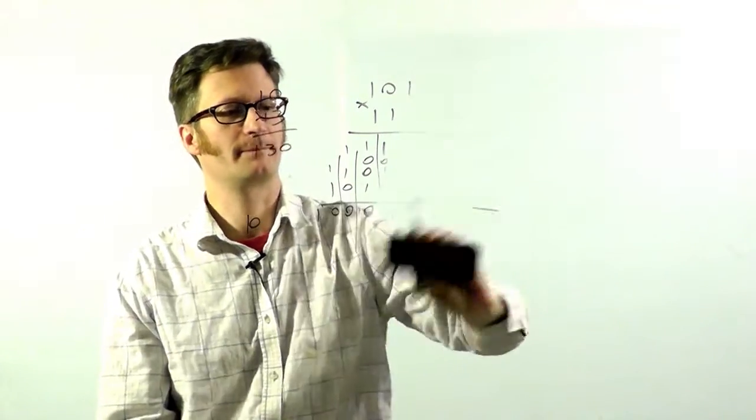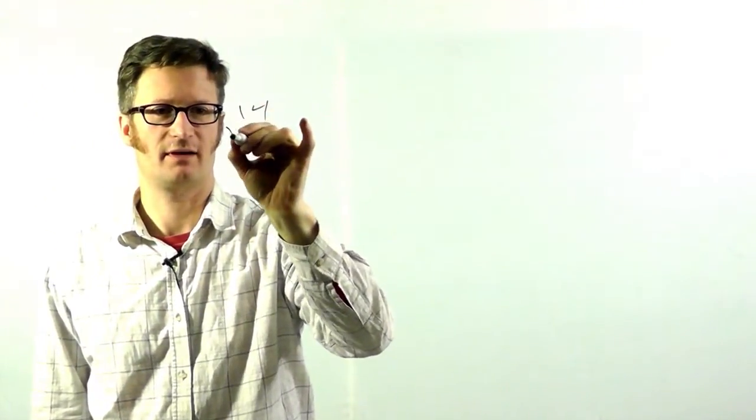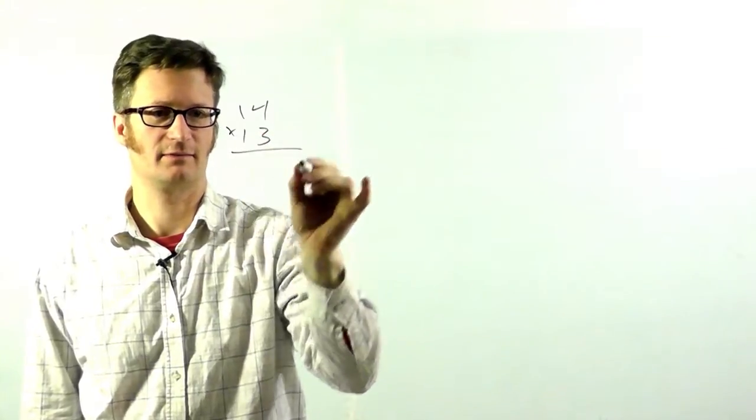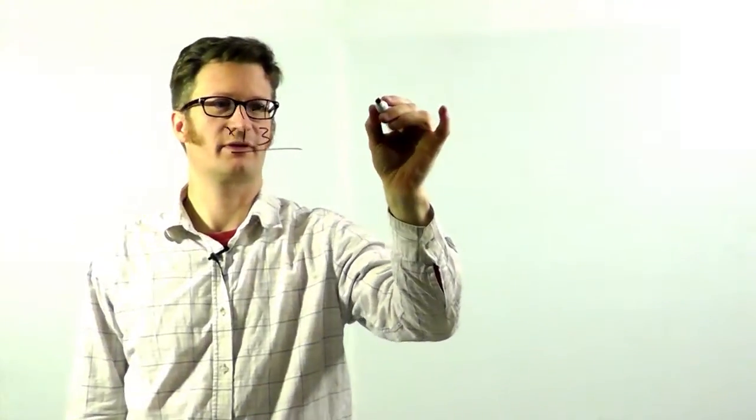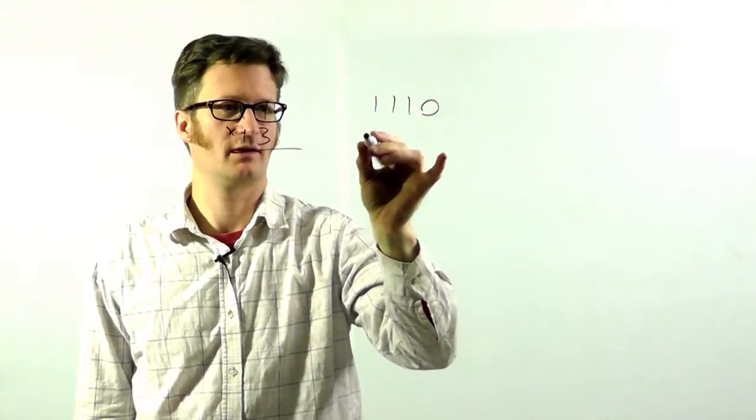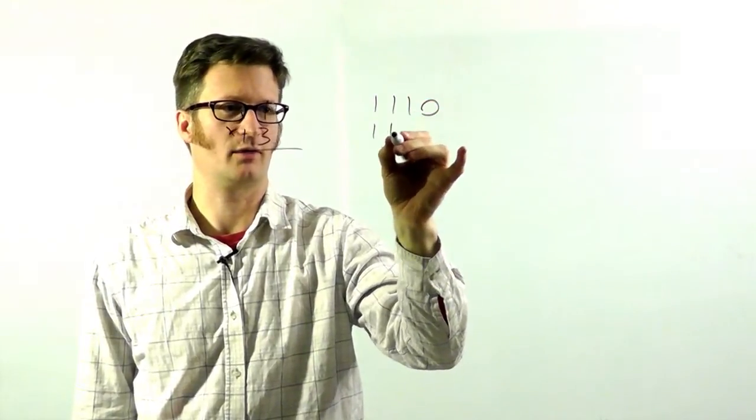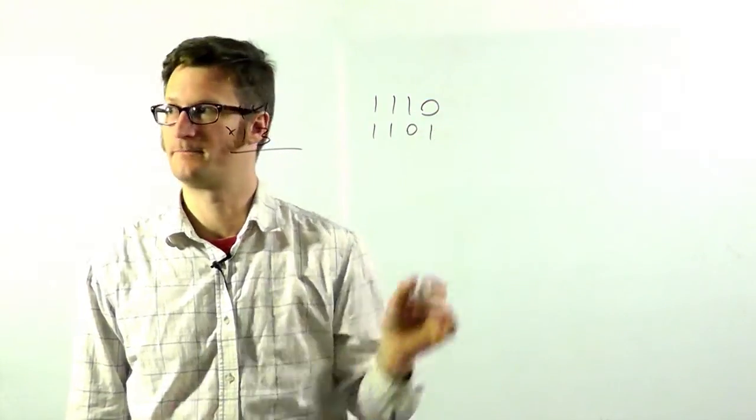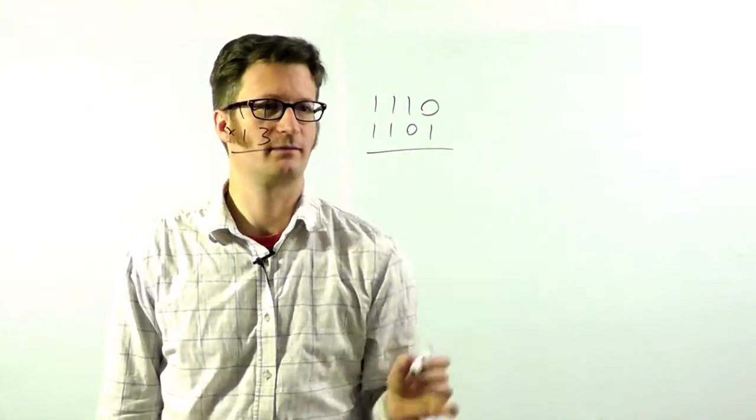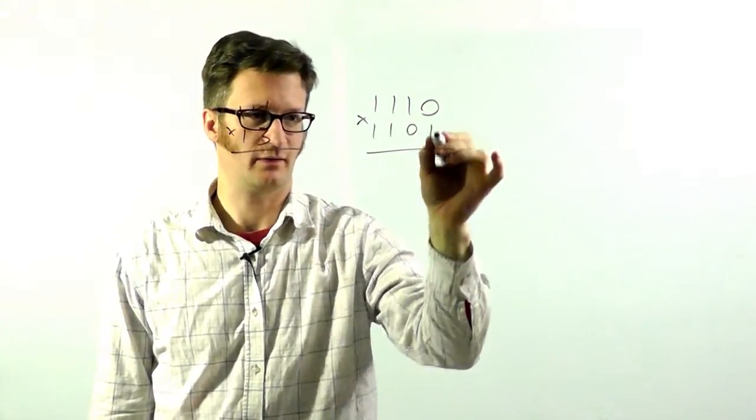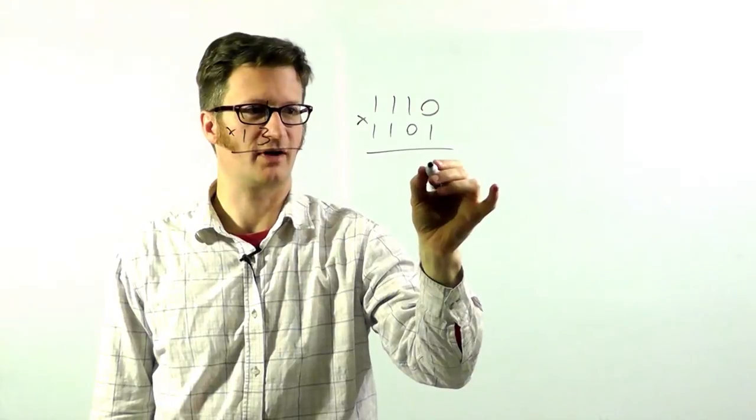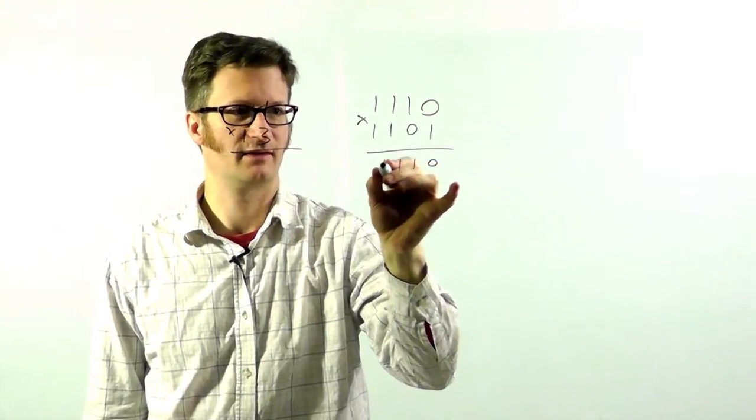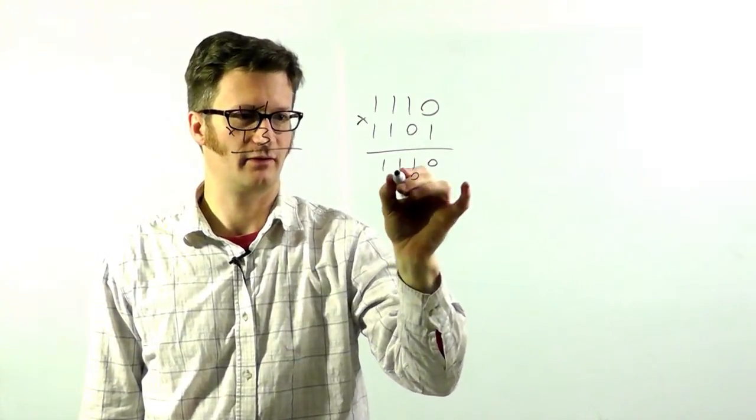Let's do one more. And we're going to do 14 times 13. 14 in binary is 1110. And 13 is 1101. So again, if it's a 1, we just copy it down just as it is. If it's a 0, it's all 0's.